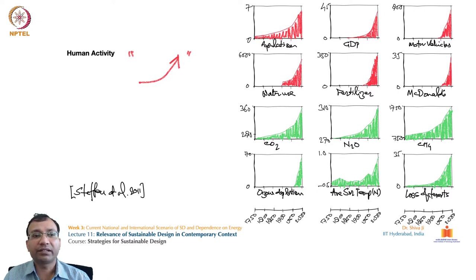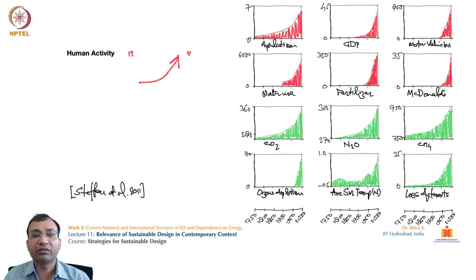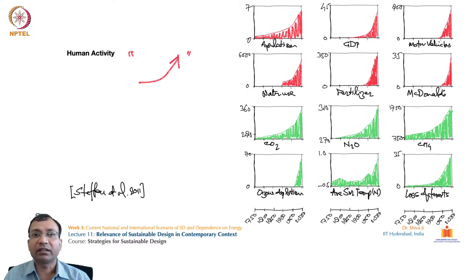This data is taken from the year 1750, 1800, 1850, 1900, 1950, and the year 2000 — at an interval of about 50 years — observing how changes have taken place across different domains of human life over the last 250 to 300 years.